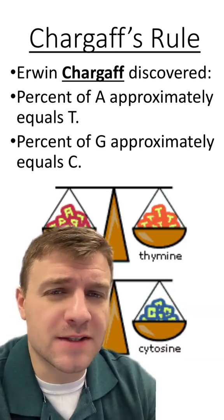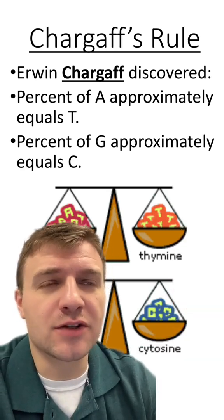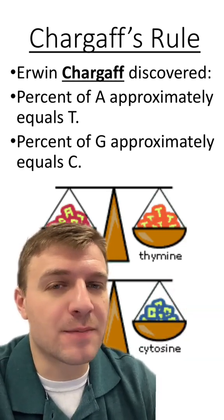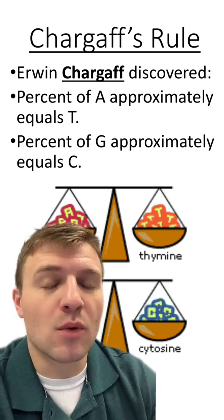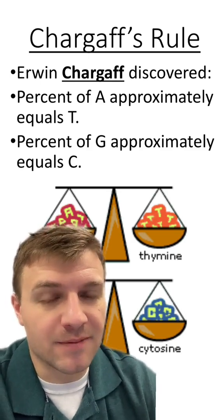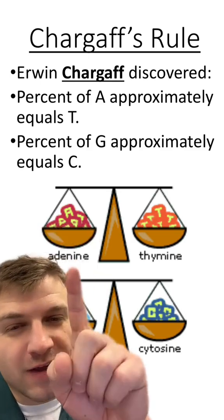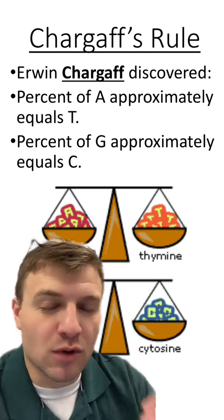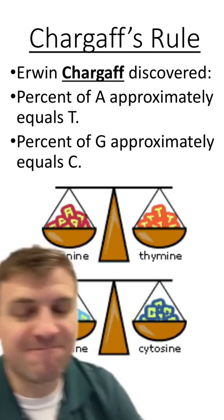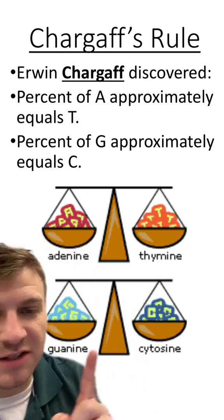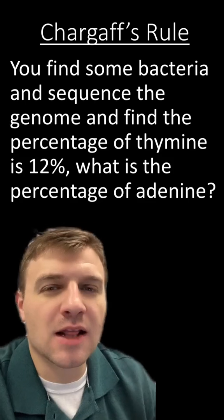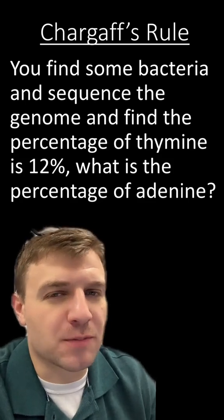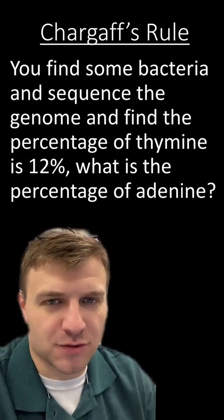So this rule basically states that you're going to find the same amounts of two nucleotides within DNA. The amount of A's and T's will roughly be the same, and the amount of G's and C's will roughly be around the same. Let's do two practice problems about Chargaff's Rule.